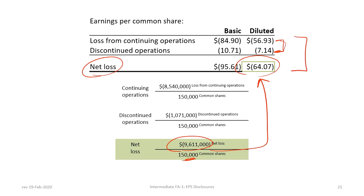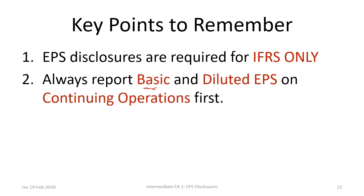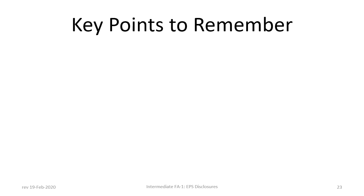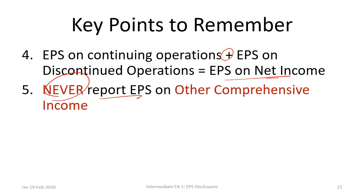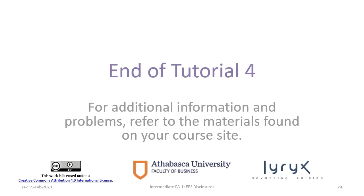Please ensure that you're comfortable with the calculations before proceeding to the next tutorial. To recap the important points: First, earnings per share disclosures are required only for IFRS. Second, always report basic and diluted EPS on continuing operations first, then on discontinued operations second, only if applicable. Fourth, EPS on continuing operations plus EPS on discontinued operations equals EPS on net income. Remember to never report EPS on other comprehensive income — that's not a requirement. Finally, advanced diluted EPS requires much more complex computations and is beyond the scope of this course. This concludes tutorial four. We hope you found it helpful.